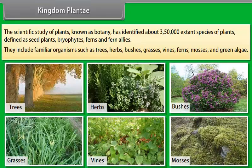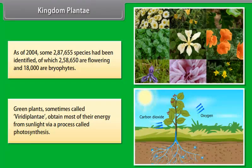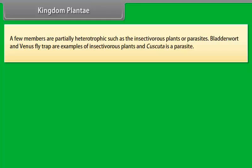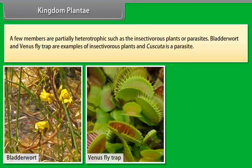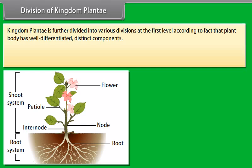Kingdom Plantae. Plants are living organisms belonging to the kingdom Plantae. The plant cells have a eukaryotic structure with prominent chloroplasts and cell wall mainly made of cellulose. Plantae includes algae, bryophytes, pteridophyta, gymnosperms, and angiosperms. The scientific study of plants, known as botany, has identified about 350,000 extant species of plants defined as seed plants, bryophytes, ferns and fern allies. They include familiar organisms such as trees, herbs, bushes, grasses, vines, ferns, mosses, and green algae.